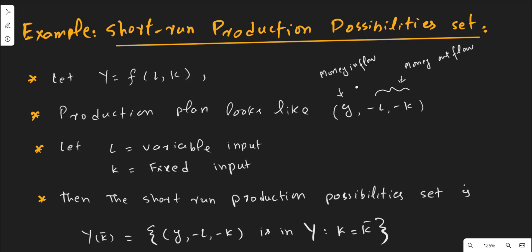It should be noted that this is a single production plan, and there can be many other production plans besides this one. Now assume that labor is the variable input and capital is the fixed input. If one variable is variable and the other is fixed, then the short-run production possibility set is generated by Y of K-bar, where K-bar denotes constant capital.